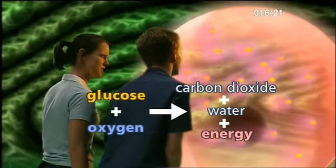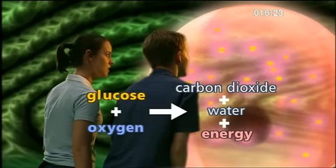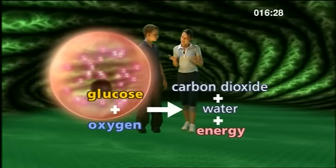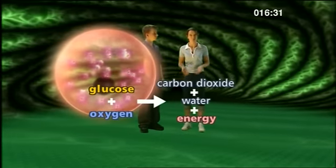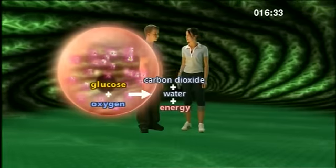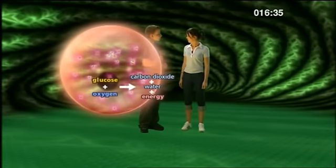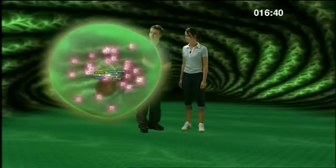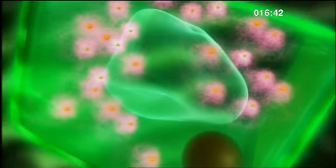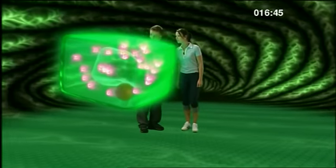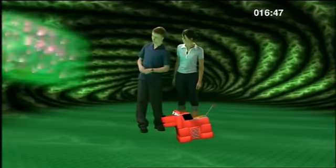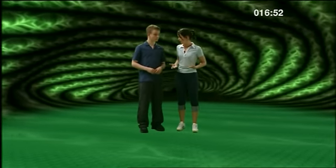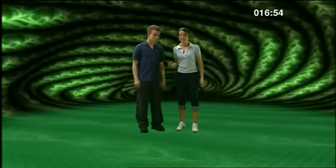Is that it? Yes. So respiration is the chemical reaction of oxygen and glucose to form carbon dioxide, water, and energy. Yes. And respiration not only happens in animal cells, but in plant cells, too. So plant and animal cells respire because they need to create energy for life processes.